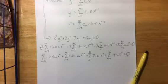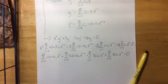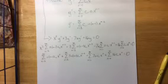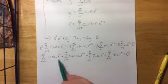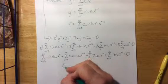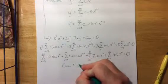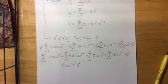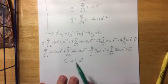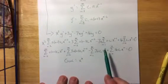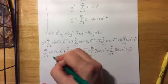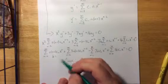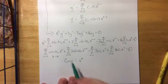The next step is to turn this into just one big series expression using a technique called re-indexing. What we're doing is shifting everything so that every single one of these series will have x raised to the same power — our goal is to have x raised to the k power in all cases. To get x raised to the k power, we make an appropriate substitution: every exponent we see, we want that to become k. On the first term, since we already have x to the n, we simply substitute k equals n.